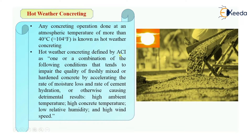So this is the definition given by ACI — the American Concrete Institute — where one or more combination of conditions leads to high moisture loss, accelerating the rate of moisture loss and rate of cement hydration, causing detrimental results such as high ambient temperature, high concrete temperature, low relative humidity, and high wind speed.